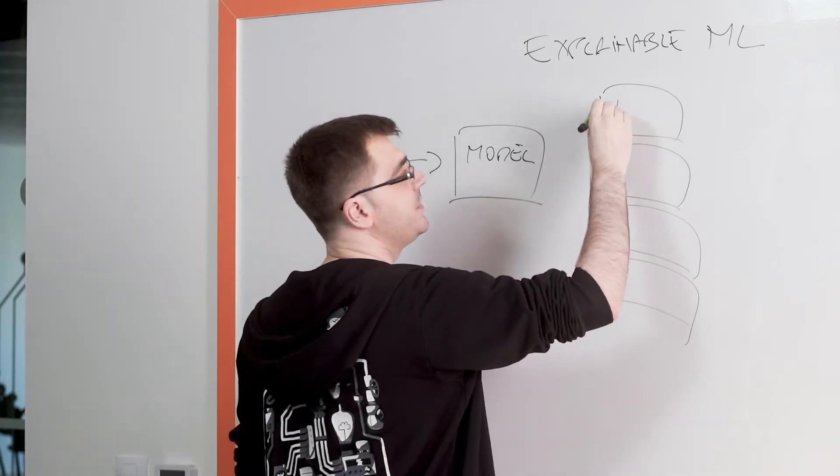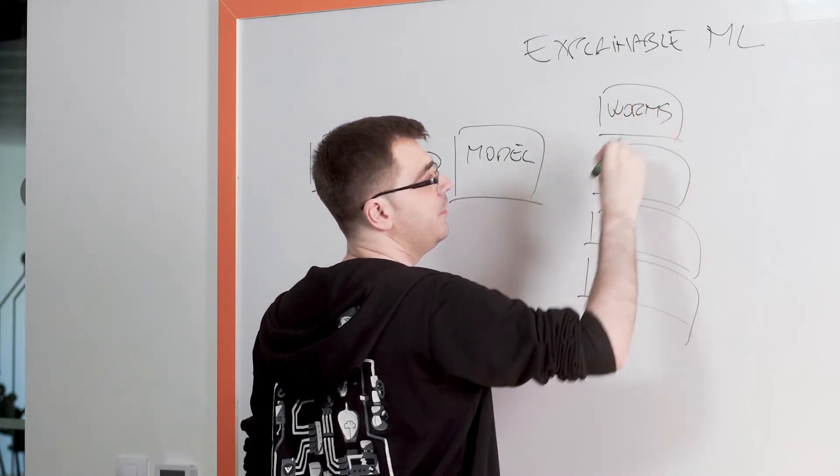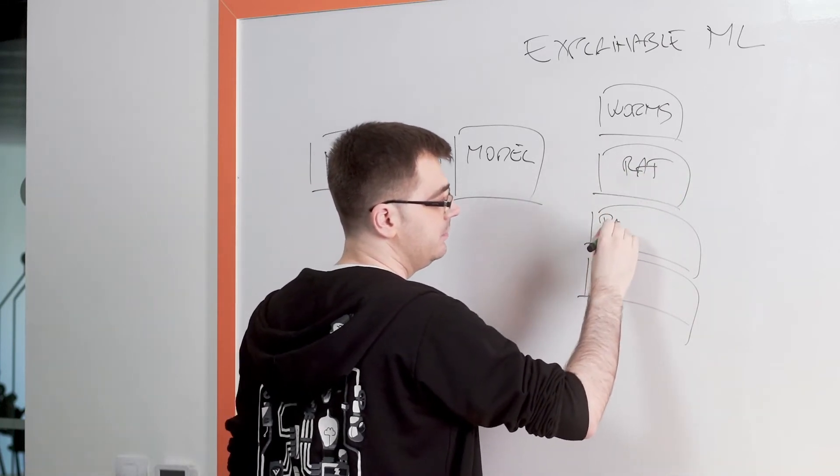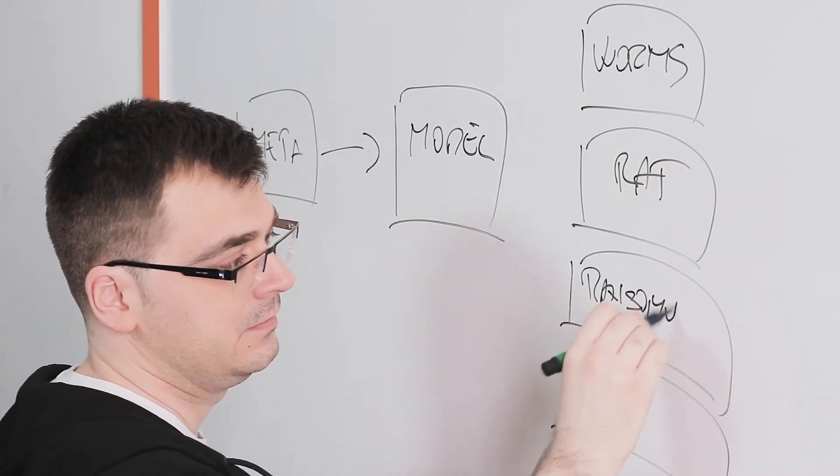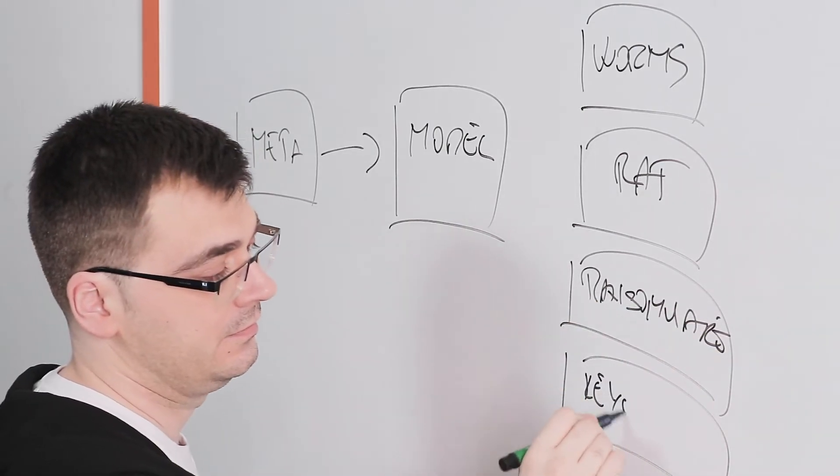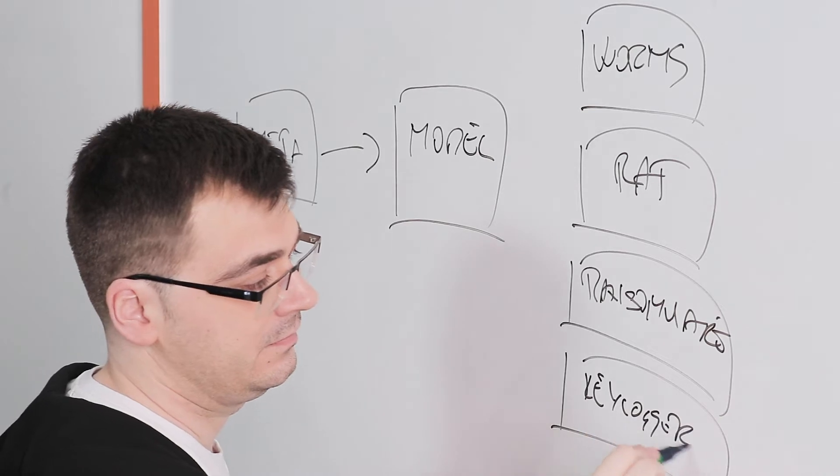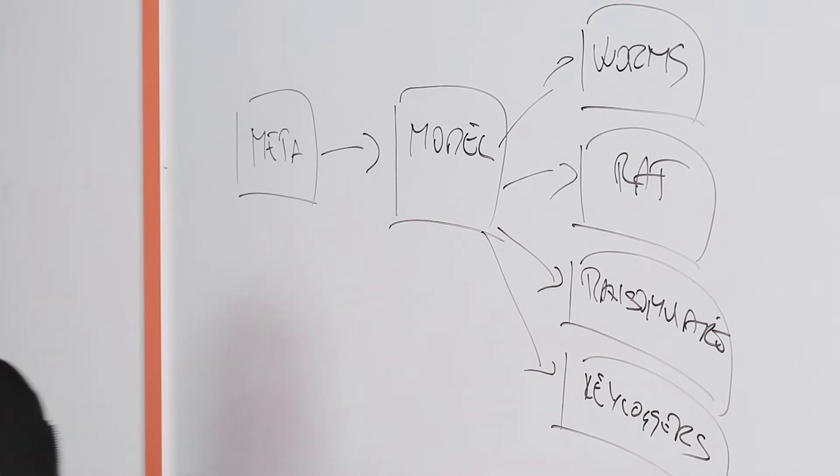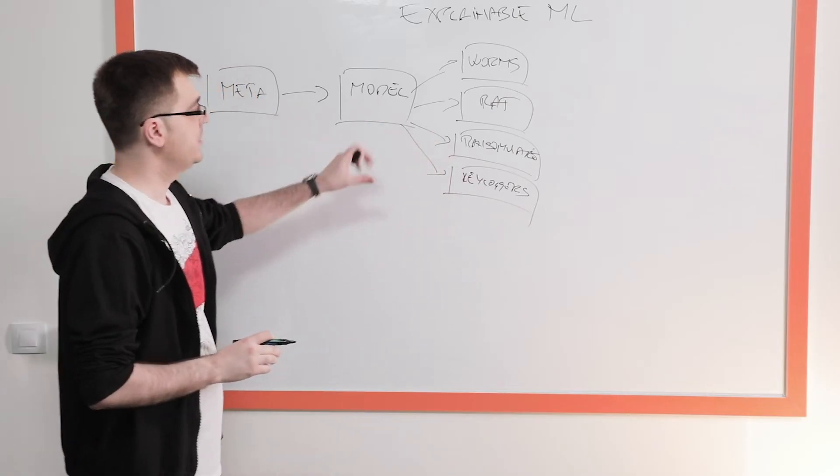And they define or detect four different threat types. So we can detect worms. We can detect RATs or backdoors. And then we can detect ransomware and keyloggers. So these are four different outcomes that our explainable machine learning can produce today.